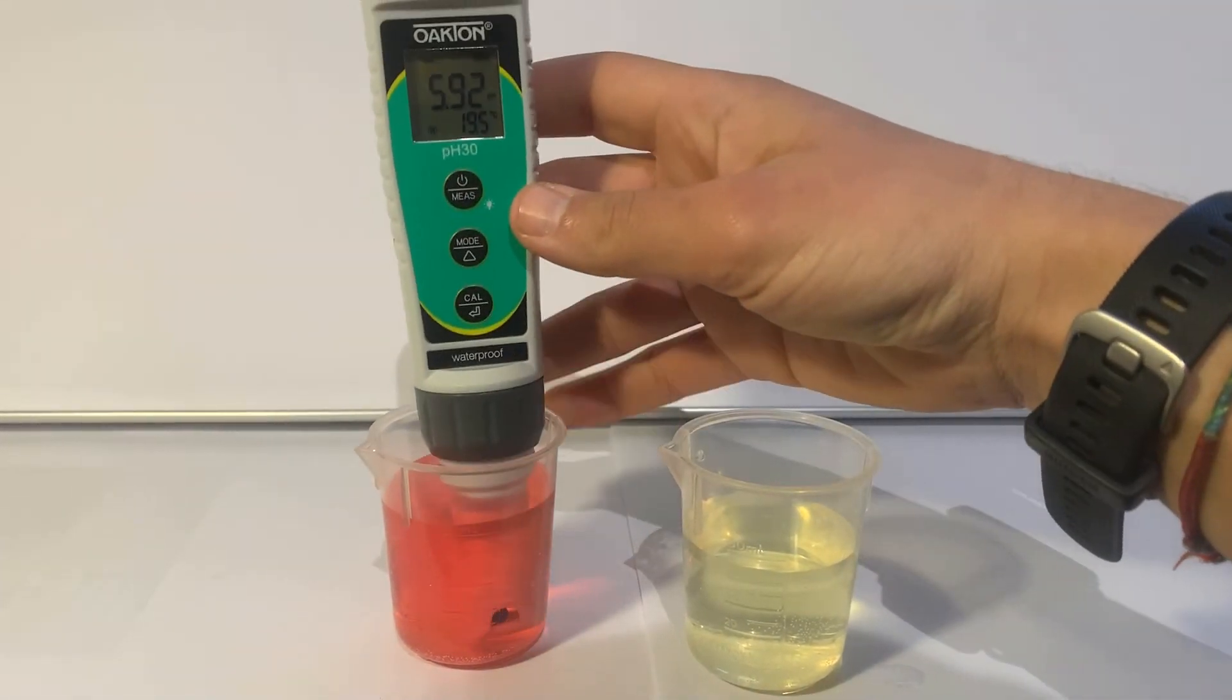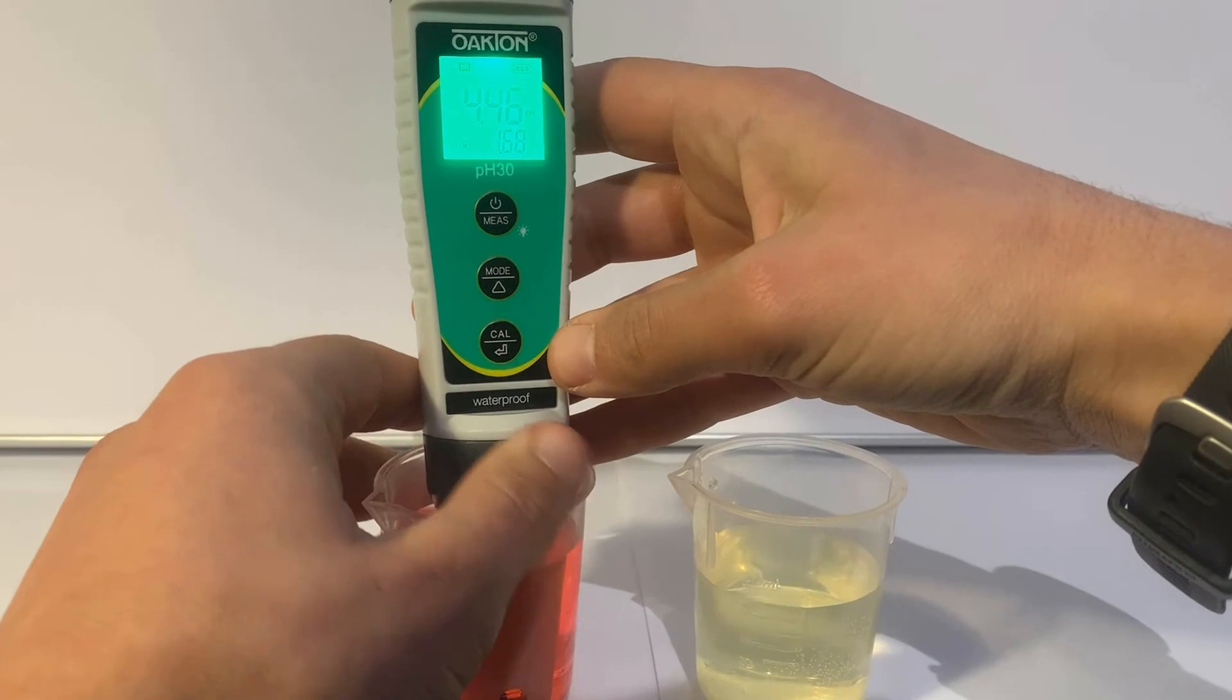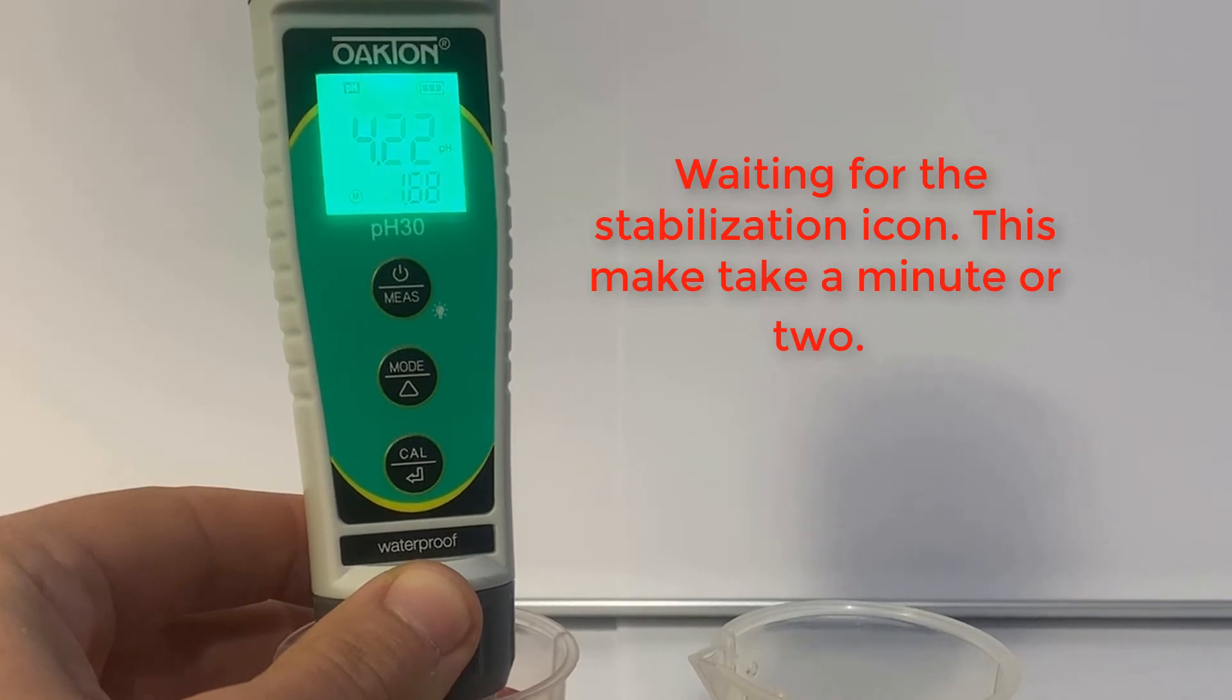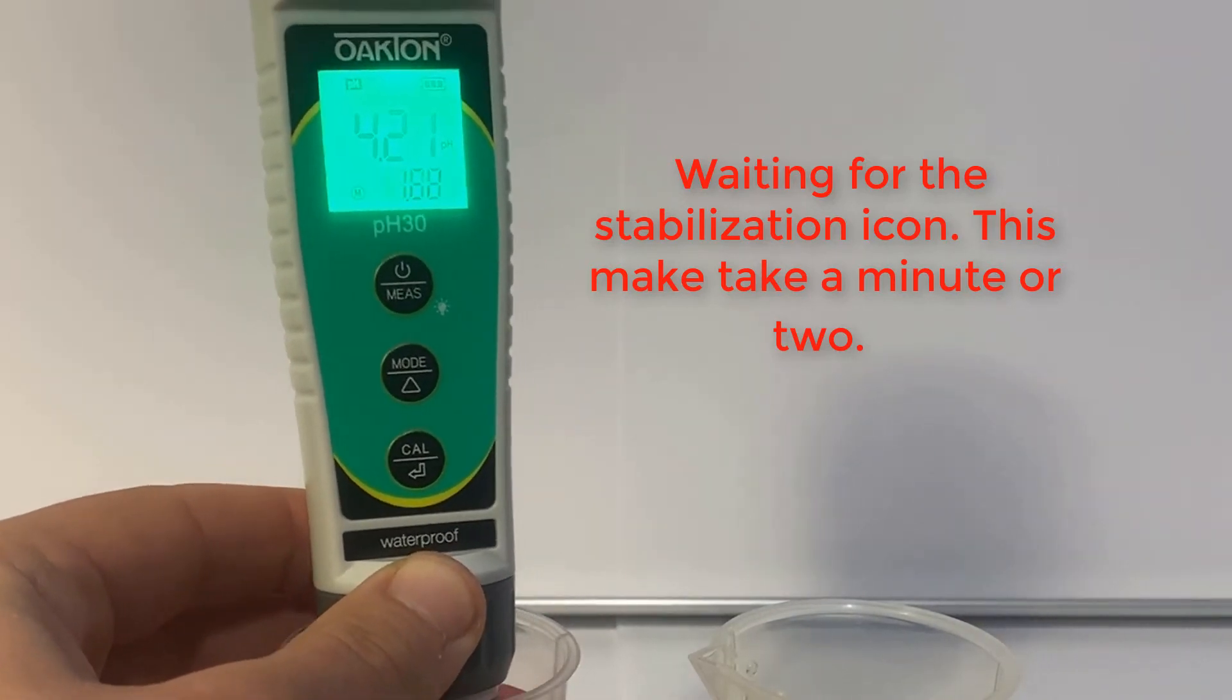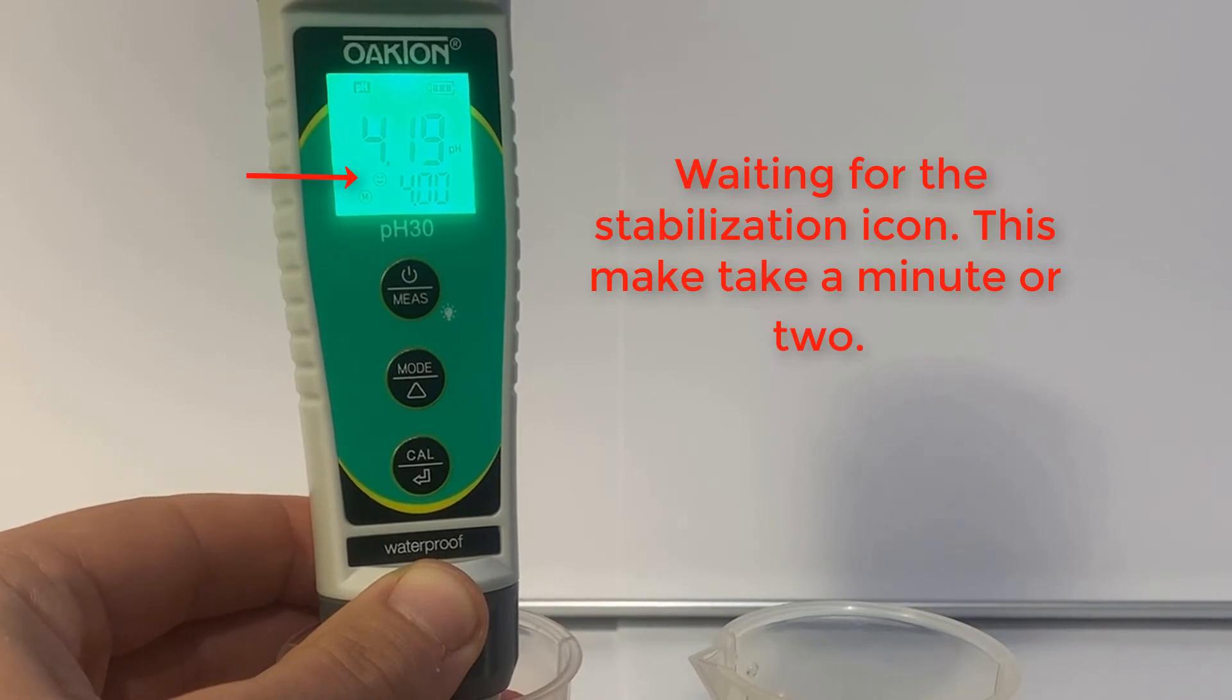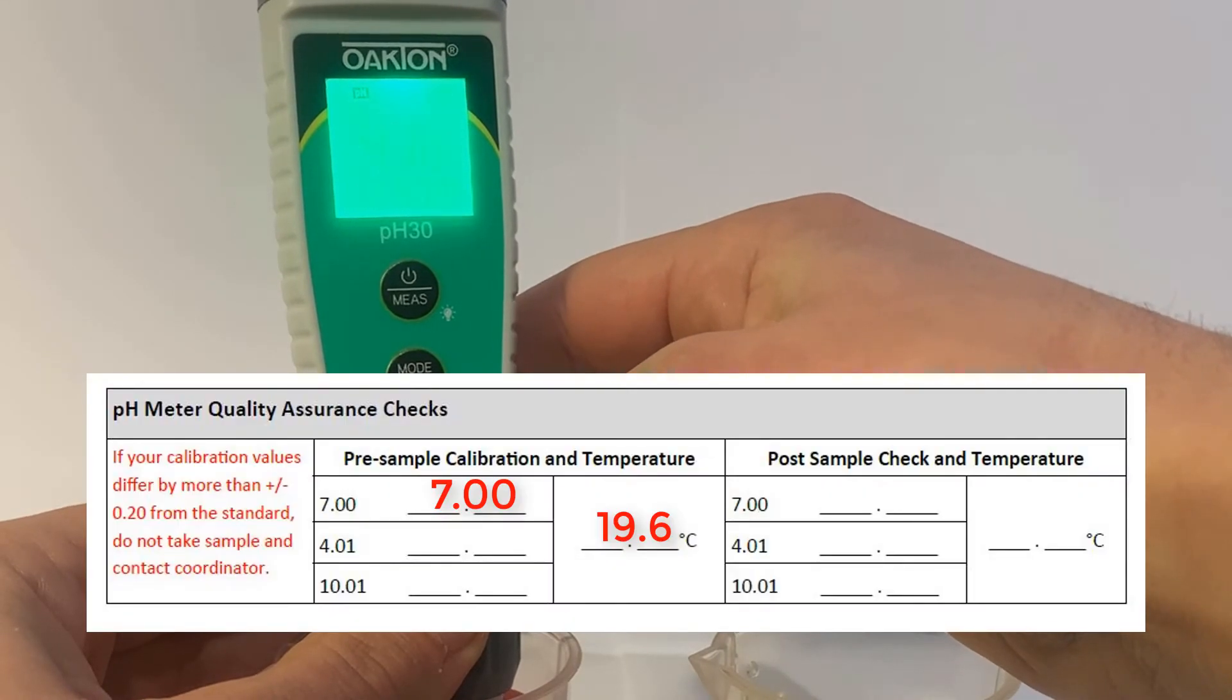Place your meter into Buffer 4 solution, long press CAL to enter calibration mode, and wait for the stabilization icon to appear. Short press CAL to save your calibration. Record the number that flashes on your data sheet.